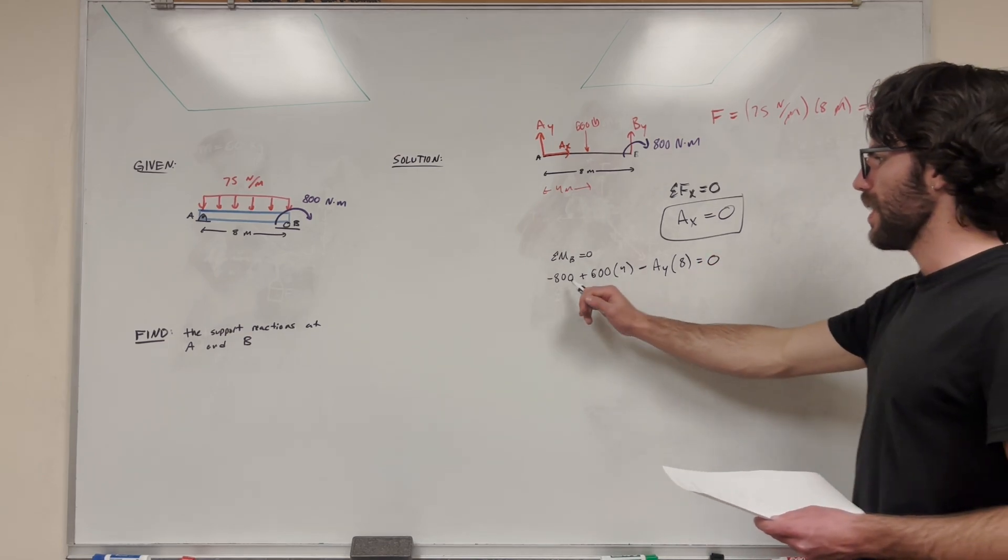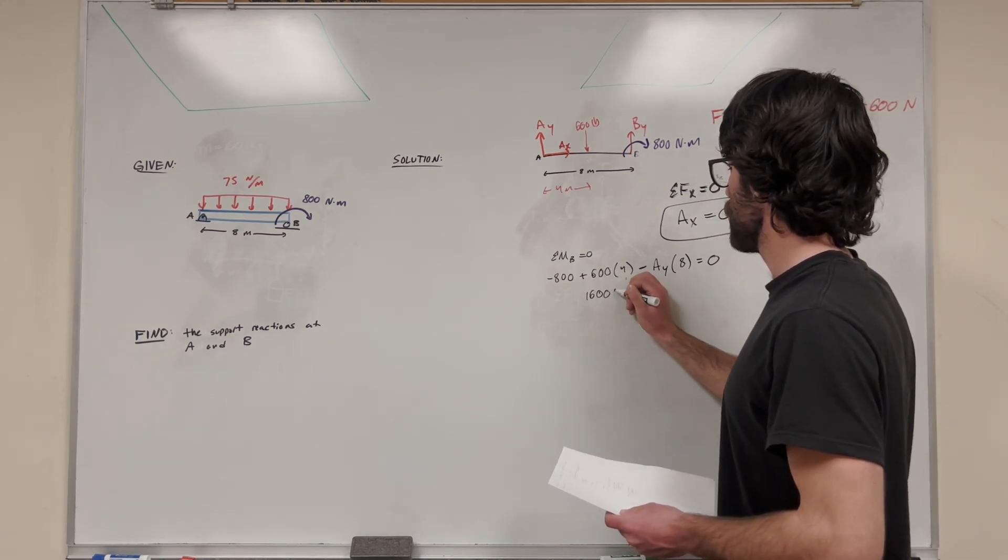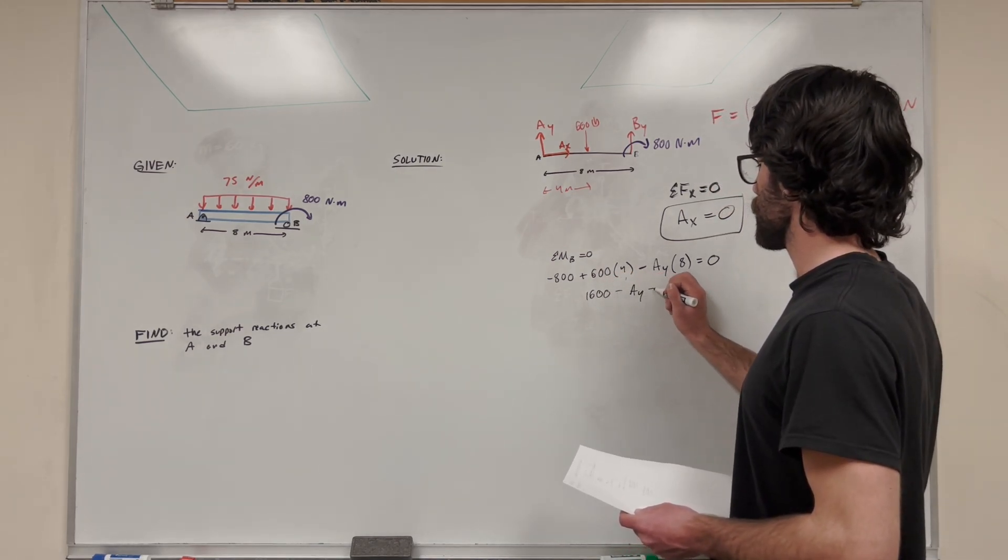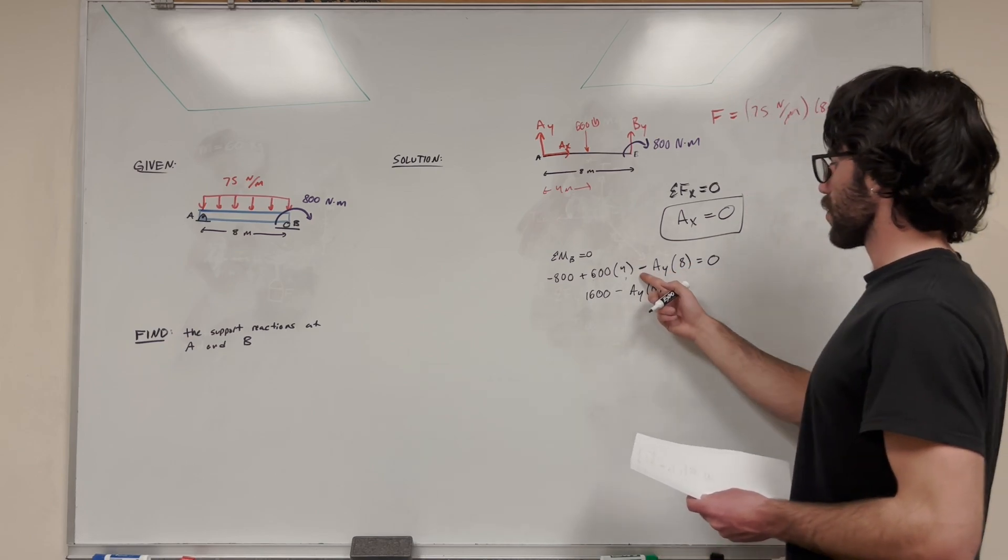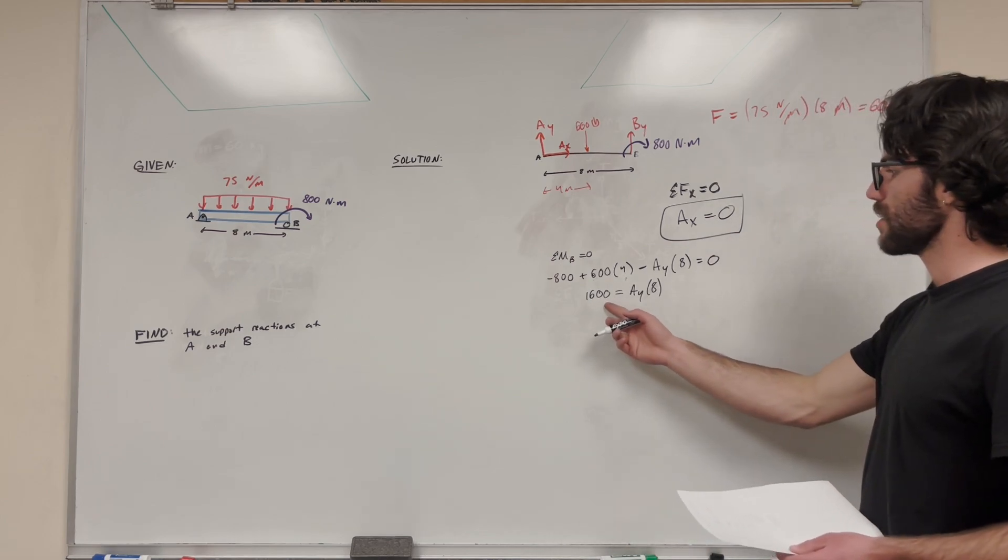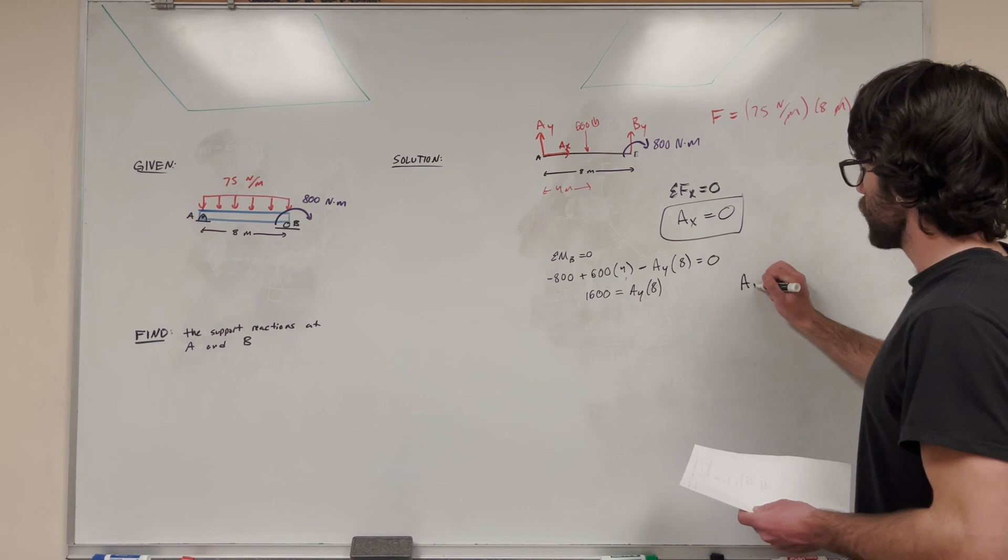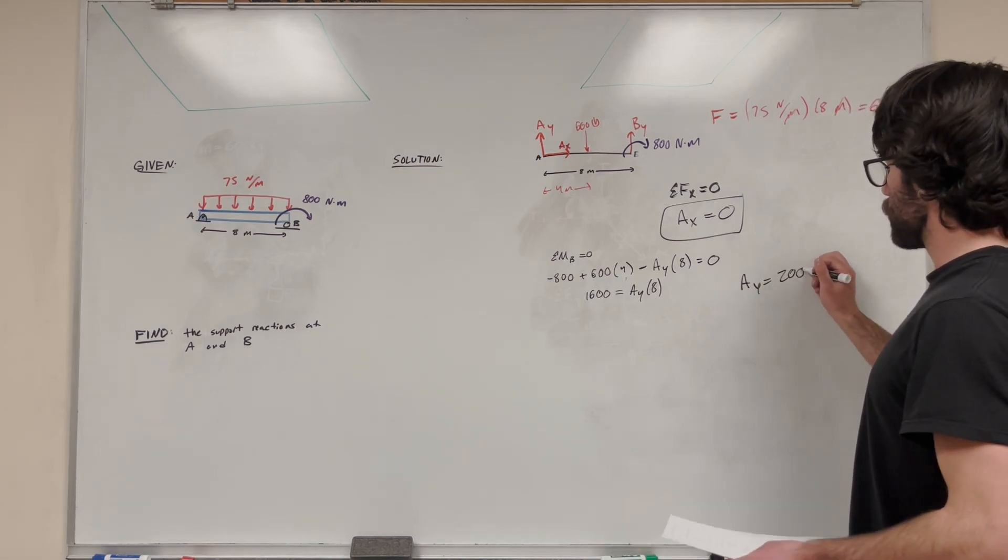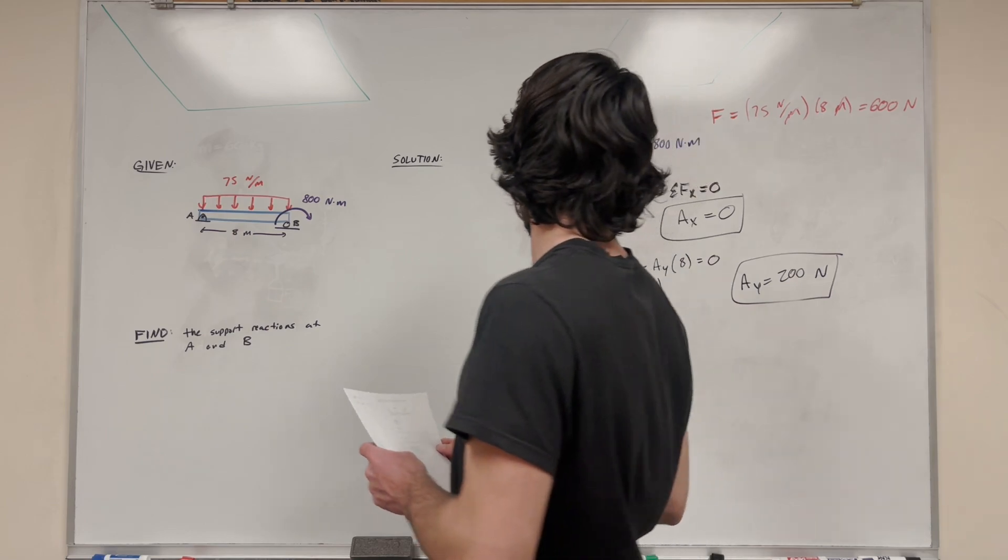So let's do the math here. We have negative 800 plus 2400. So this is going to turn into 1600 minus A_y times 8. So of course, we can add this A_y times 8 to the other side, and it'll get rid of the subtraction and make it 1600 is equal to A_y times 8. Then we divide by 8, and we're just going to get that A_y is equal to 200 pounds, or 200 newtons, sorry. There we go. So that's how you do the math to get A_y.